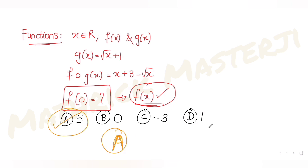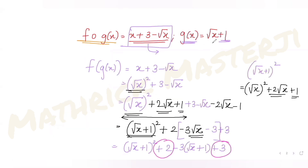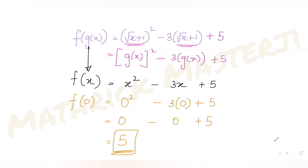I hope you've understood how to solve this type of question on functions. We were given f(g(x)) and g(x), and needed to find f(x). We converted f(g(x)) in terms of g(x) — that is, in terms of √(x+1) — which gave us f(x). Substituting x = 0 then gave f(0) = 5, matching option A. I'll see you tomorrow with another question as we continue our series on JEE Mains.